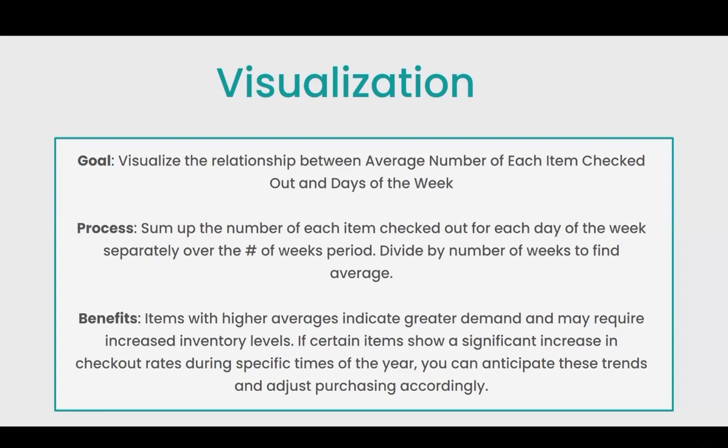In our final visualization, we aim to visualize the relationship between the average number of each item checked out and the days of the week. We summed up the number of each item checked out for each day of the week over the number of weeks period, then divided by the number of weeks to find the average. The benefit is that we can find items with higher averages indicating greater demand, which may require increased inventory levels. Additionally, if items show a significant increase in checkout rates during specific times of the year, you're able to anticipate those trends and adjust purchasing accordingly.